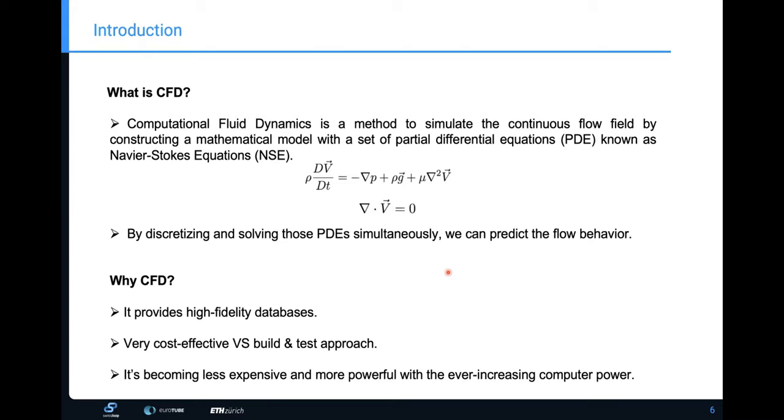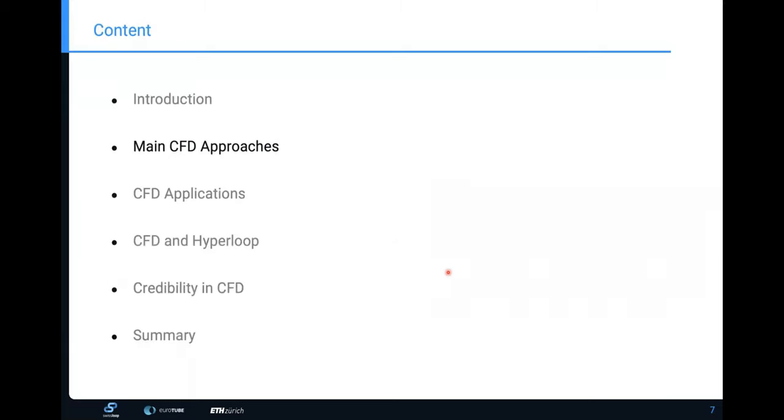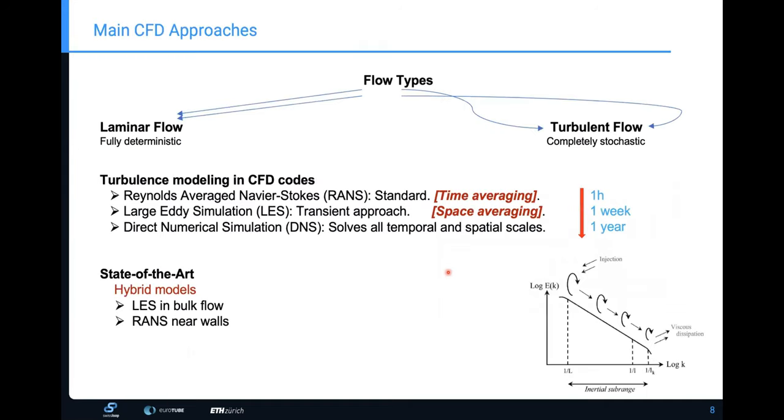And I would like also to highlight that it's becoming less expensive and more available with ever increasing computational power. I mean, the computer power, as you all may know, is exponentially increasing since the first computer and now you can operate most of the CFD problems. I mean, talking about the simple canonical flows on your personal computer, which was not possible before.